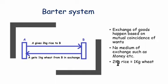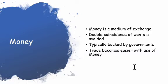We can assume that 2 kg of rice has an equivalent value of 1 kg of wheat, meaning wheat is more valuable than rice in this example. Now let us understand how money will help simplify this particular transaction. Money is a medium of exchange and is very important in any modern society. When we use money, the double coincidence of want is avoided. Money is typically backed by respective governments, so there is an authenticity factor to it, and trade becomes easier with the use of money.